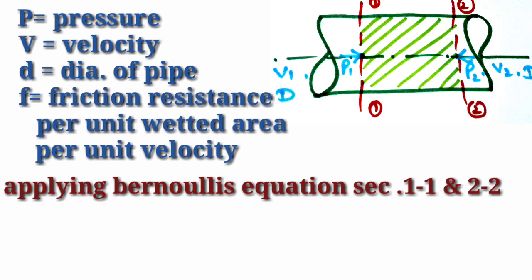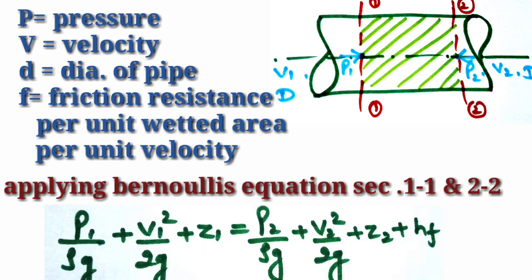What is the Darcy equation and how do we prove it? First we will make a diagram. We will take a pipe and apply Bernoulli's equation to solve it. Water flows inside the pipe. We will take two sections: 1-1 and 2-2. The pressure at the first section is P1 and at the second section is P2. The first section has velocity V1 and diameter D, and the second section has velocity V2 and diameter D.